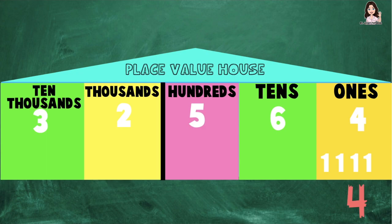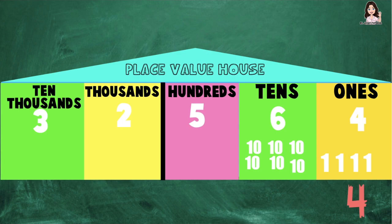Let's proceed now to the tens place. We have 6 tens. Count with me, children: 10, 20, 30, 40, 50, 60. So the value of digit 6 at the tens place is 60.